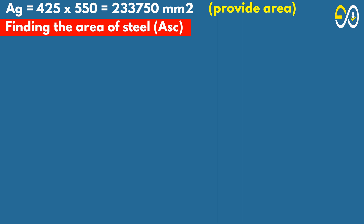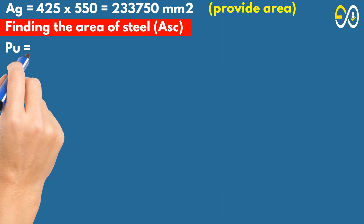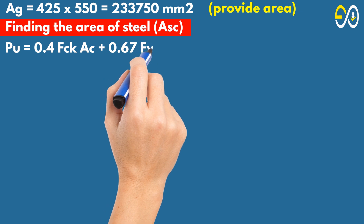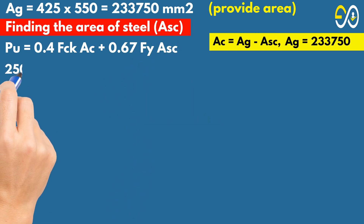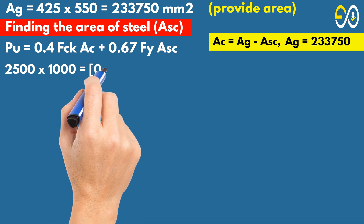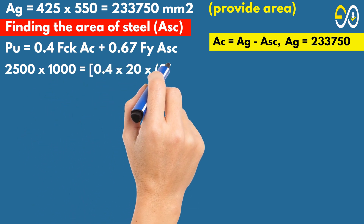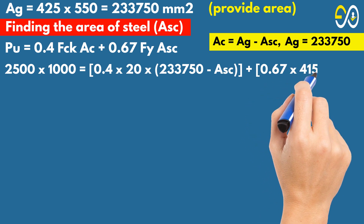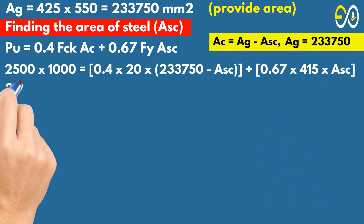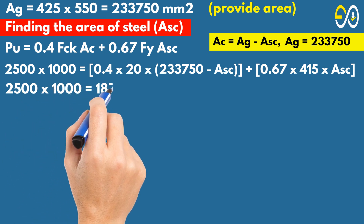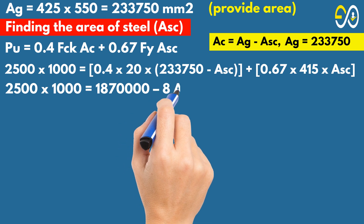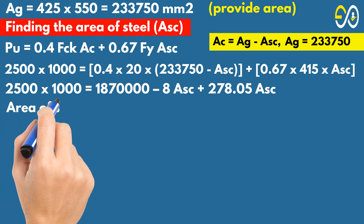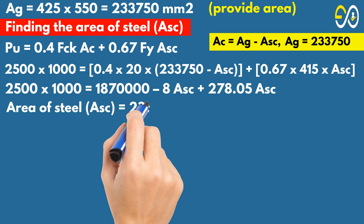Finding the area of steel, Asc. Using Pu equals 0.4 times fck times Ac plus 0.67 times fy times Asc: 2,500,000 equals 0.4 times 20 times (233,750 minus Asc) plus 0.67 times 415 times Asc. This gives 2,500,000 equals 1,870,000 minus 8 Asc plus 278.05 Asc. Solving, area of steel Asc equals 2,333 square millimeters.